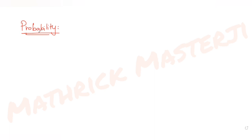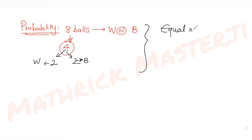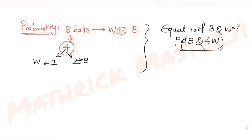The question tells us that a bag contains eight balls whose colors are either white or black. Four balls are drawn at random without replacement from these eight, and it was found that two were white and two were black. The question asks us to find the probability that the bag contains equal number of black and white balls — meaning exactly four black and four white — out of which two black and two white are taken out.